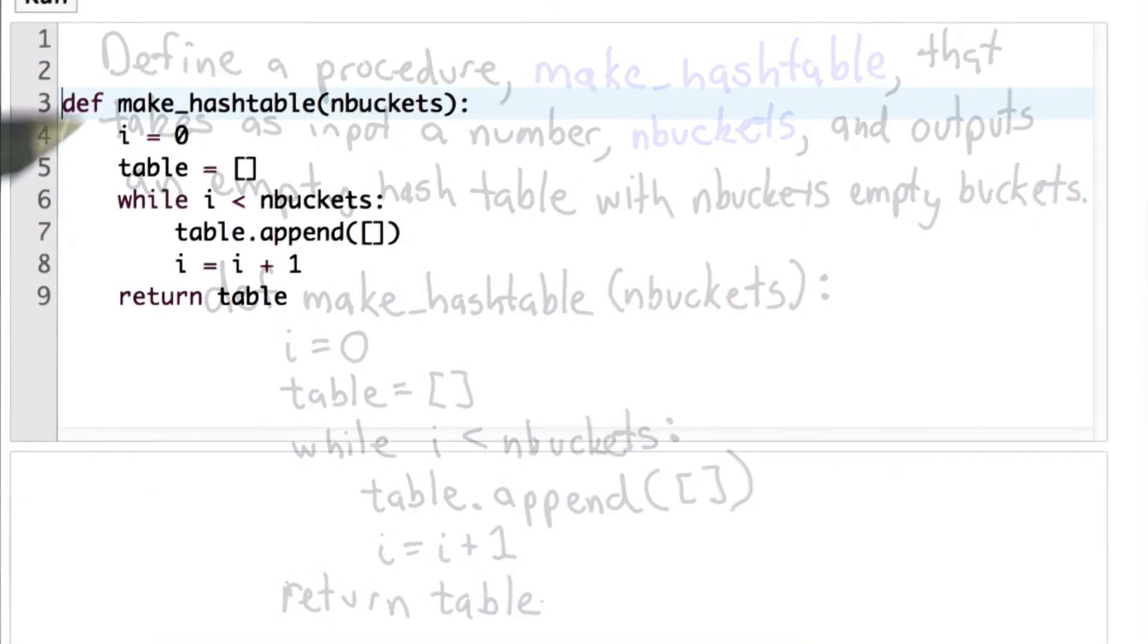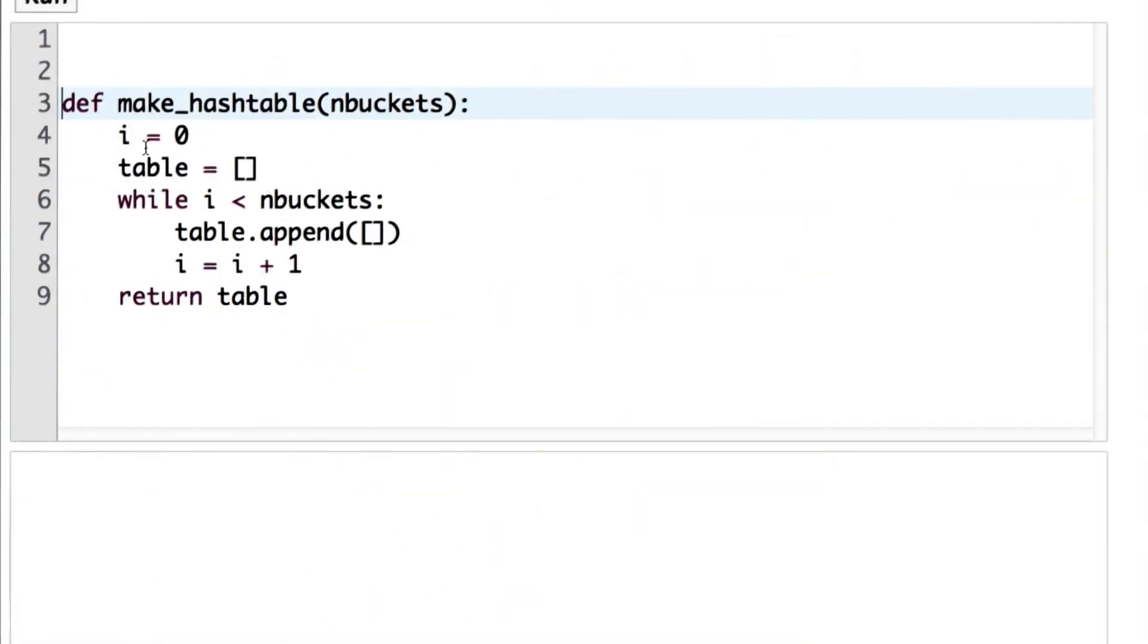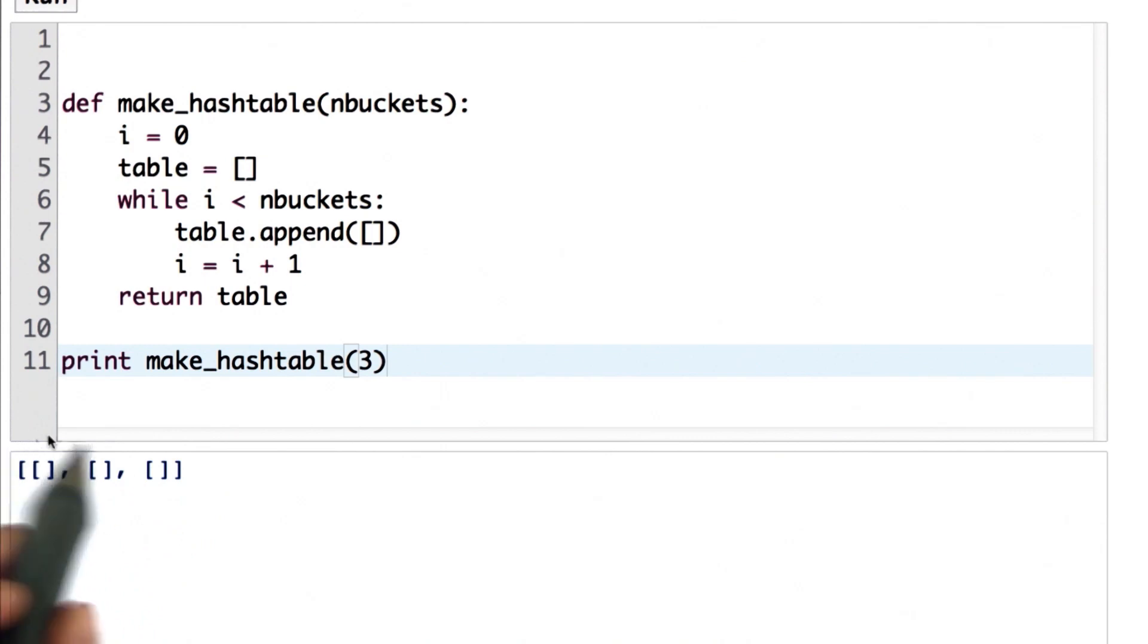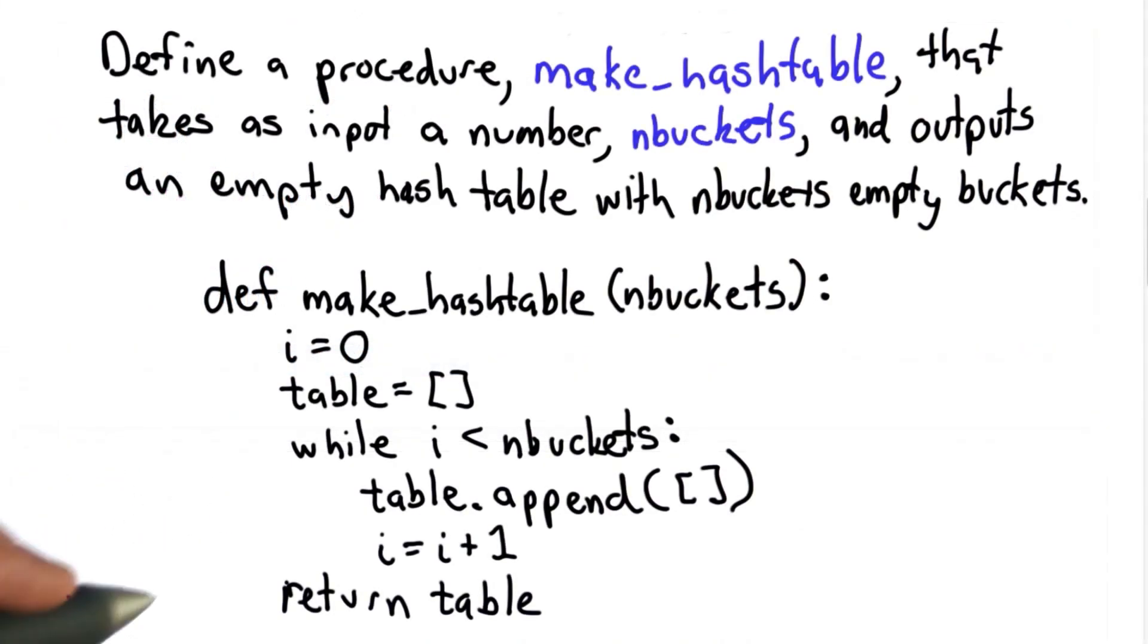So let's try that in the Python interpreter. So here's the code, just like we wrote out. And we'll print out the result of making a hash table. We'll keep the number of buckets small for printing. For real use we're going to want to have many more than three buckets. And let's run that. And we see what we got is a list with three empty lists as its elements. So this works okay.